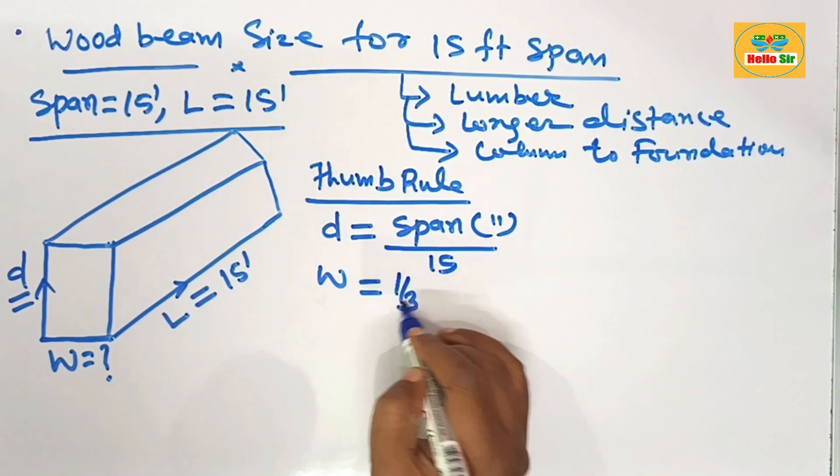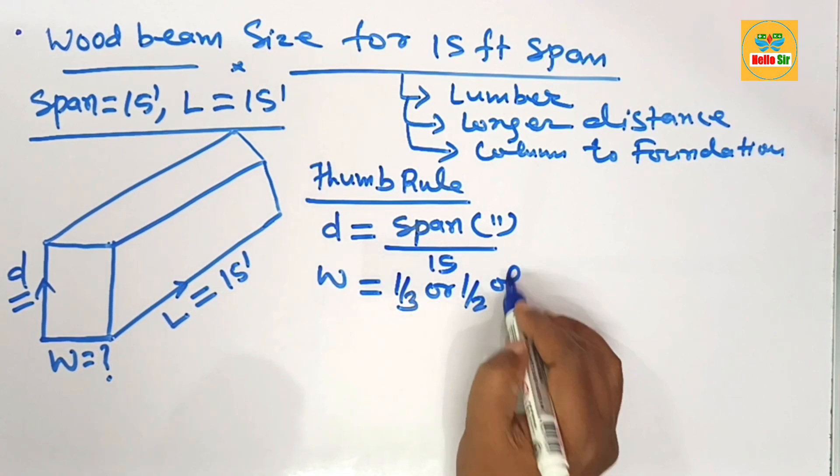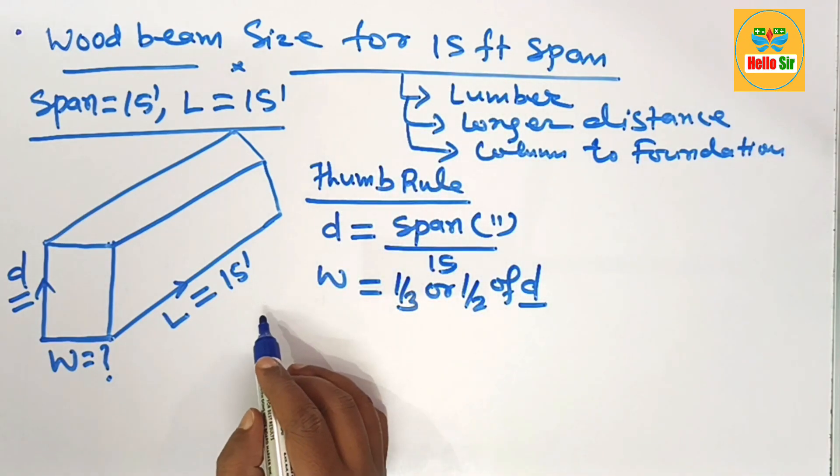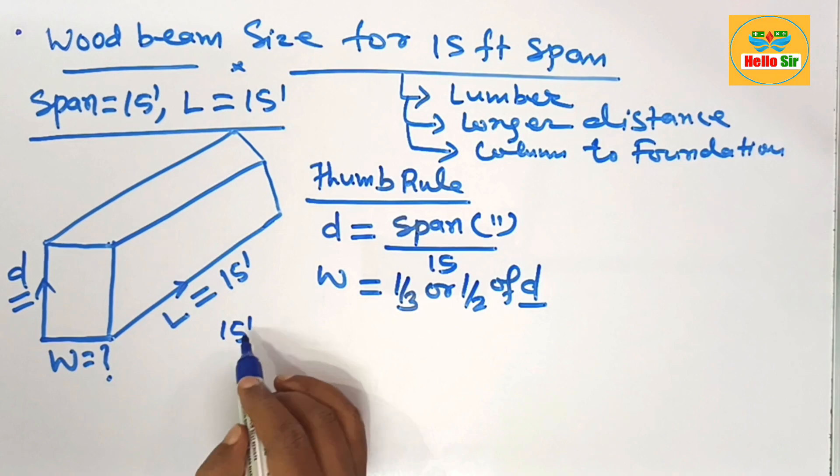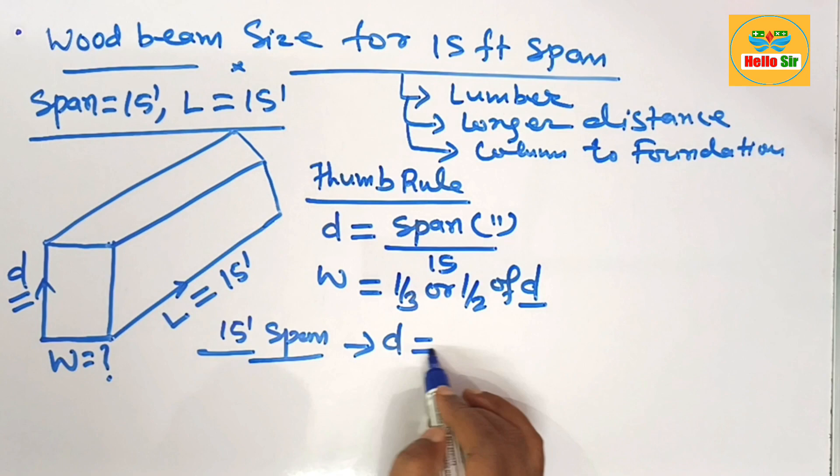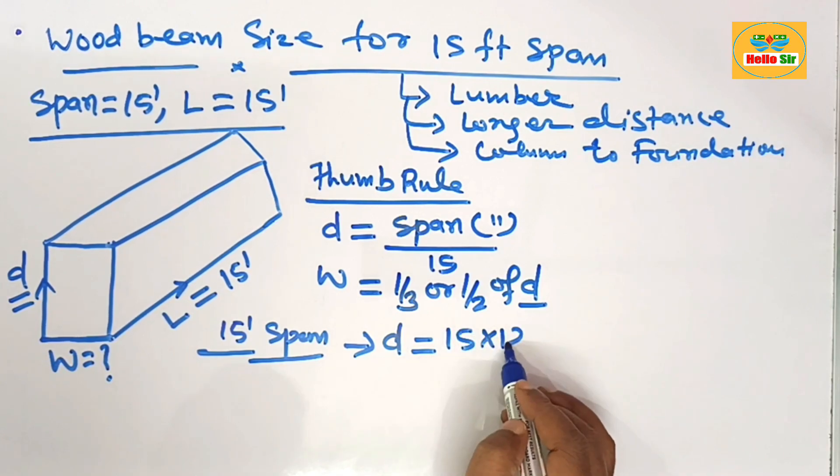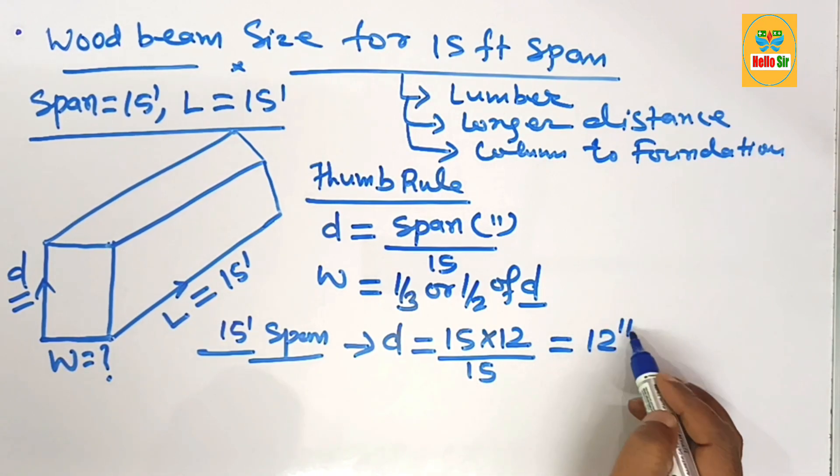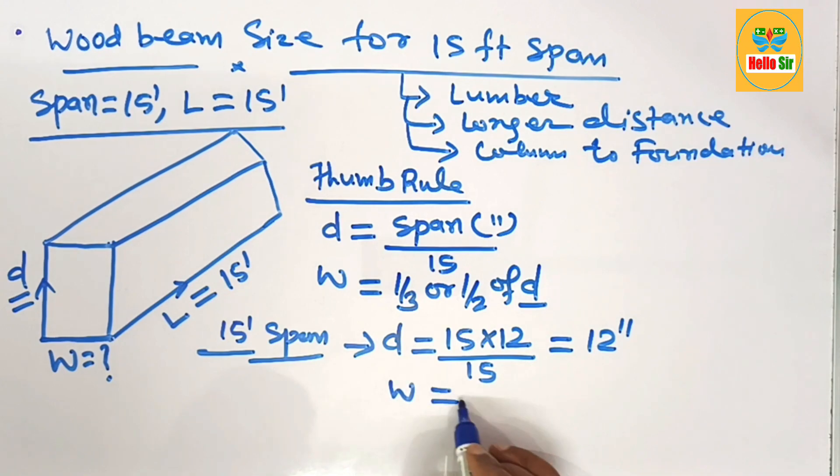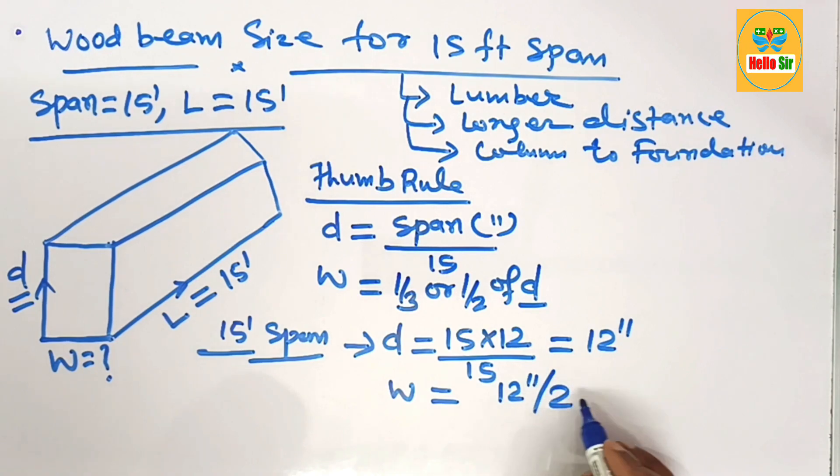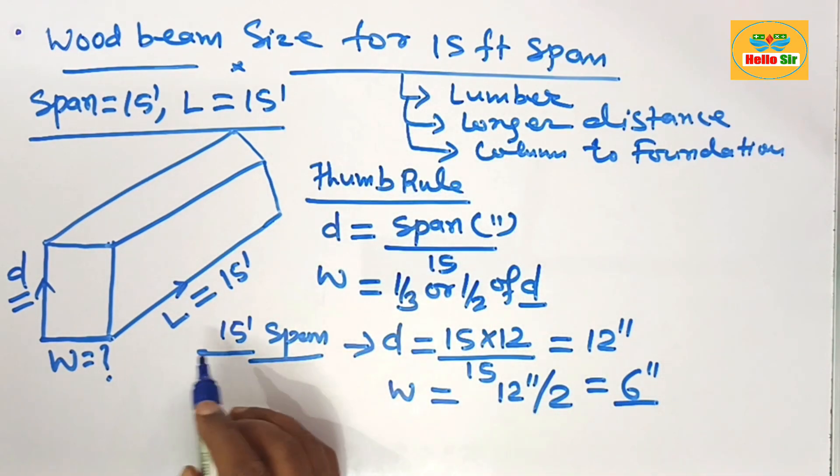Here you have to find out wood beam size for a 15-foot span. The depth section of the beam equals 15 multiplied by 12 and divided by 15, which comes out to 12 inches. The width section of the beam: divide your depth section by 2, which will come out to about 6 inches.